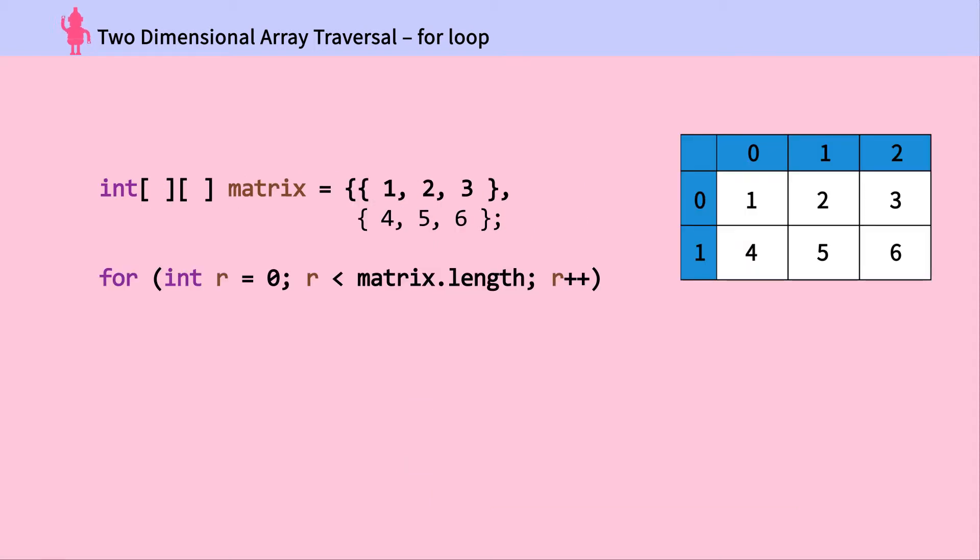Two-dimensional array traversal using for loop. The outer for loop traverses the row. R is variable for row. Matrix dot length is number of rows.